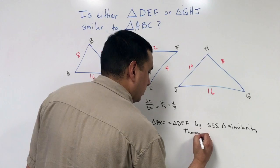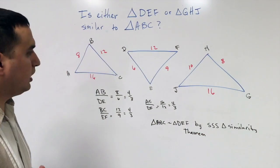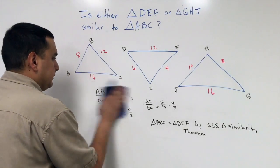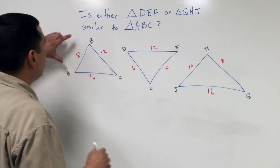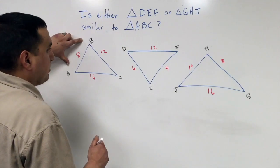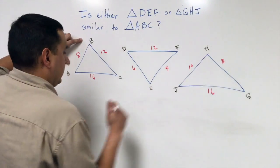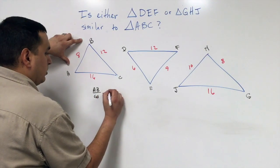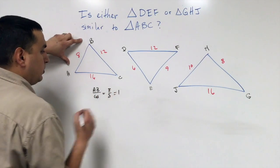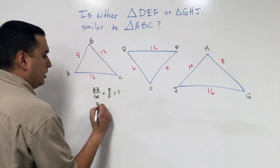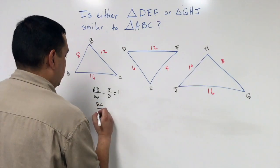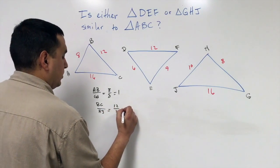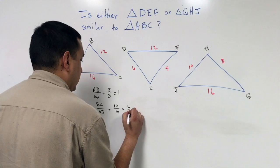Now let's look at the other two triangles and see if they are similar. I'm going to do the same thing. I want to look at AB because that's my short side, which means it's going to be AB over GH, which is 8 over 8, that's 1. If I look at BC over HJ, that's 12 over 10, which would reduce down to 6 over 5.